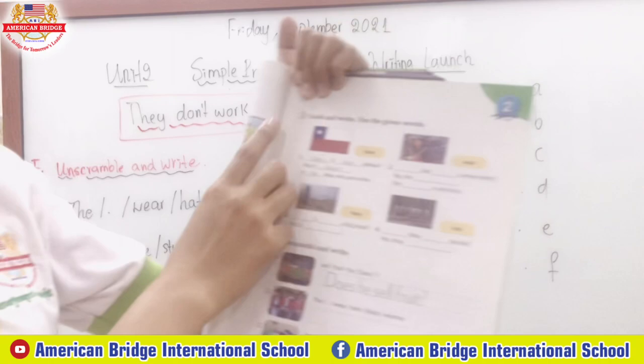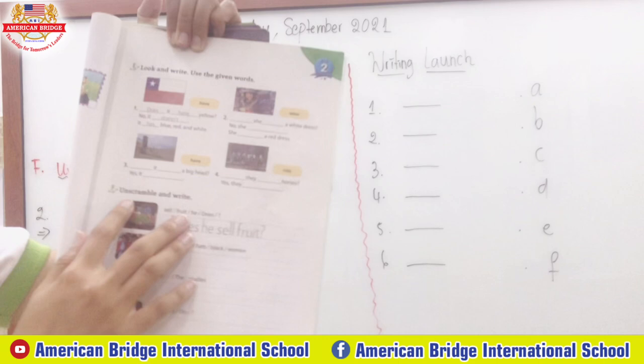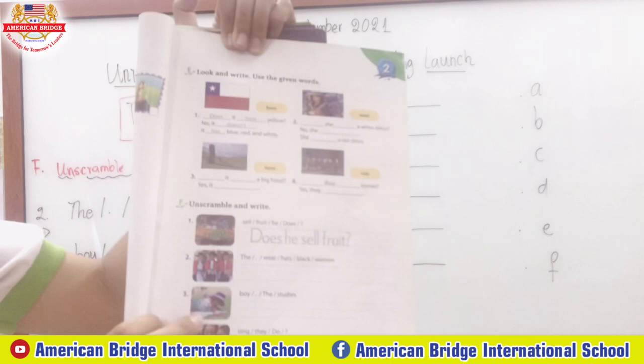You can open your book to page 15. Last time we already finished section D on page 14 and section E on page 15, which is 'look and write, use the given words.' Today we will move to section F: Unscramble and Write. Teacher would like all of you to have a look at this picture altogether.